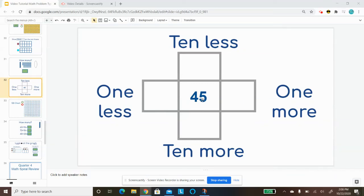For this one, we are looking at the number in the middle, which is 45, and we're trying to figure out what is 10 less, 10 more, 1 less, and 1 more.